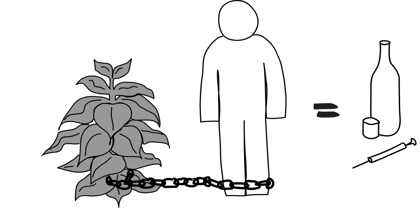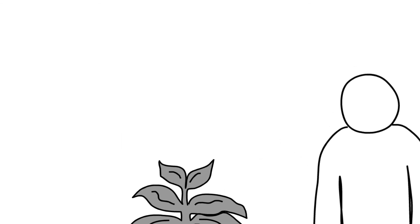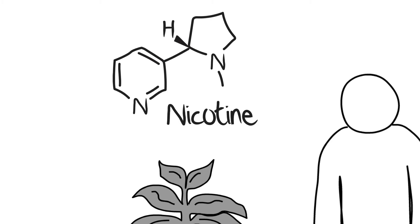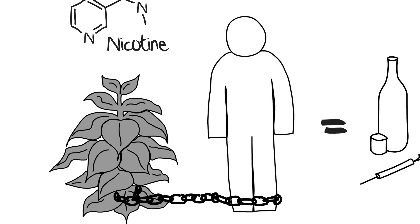Tobacco use can lead to tobacco dependence, which is characterized by a physiological dependence due to nicotine addiction and a behavioral pattern of using tobacco. Nicotine is the drug in cigarettes and other tobacco products that causes them to be addictive. The repeated use of tobacco products over time causes a person to become physically and psychologically dependent on them.